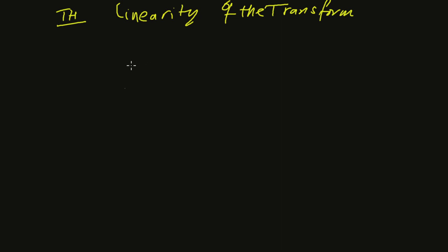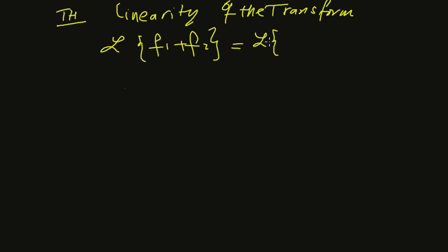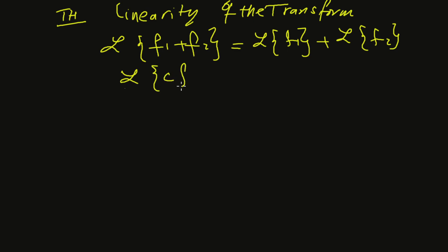The linearity of the transform is an important property. The transform of a sum of two functions is the sum of the two transforms, and the transform of a constant multiple is that constant times the transform. Here f1 and f2 are functions whose Laplace transforms exist for some s greater than alpha, and c is a constant.